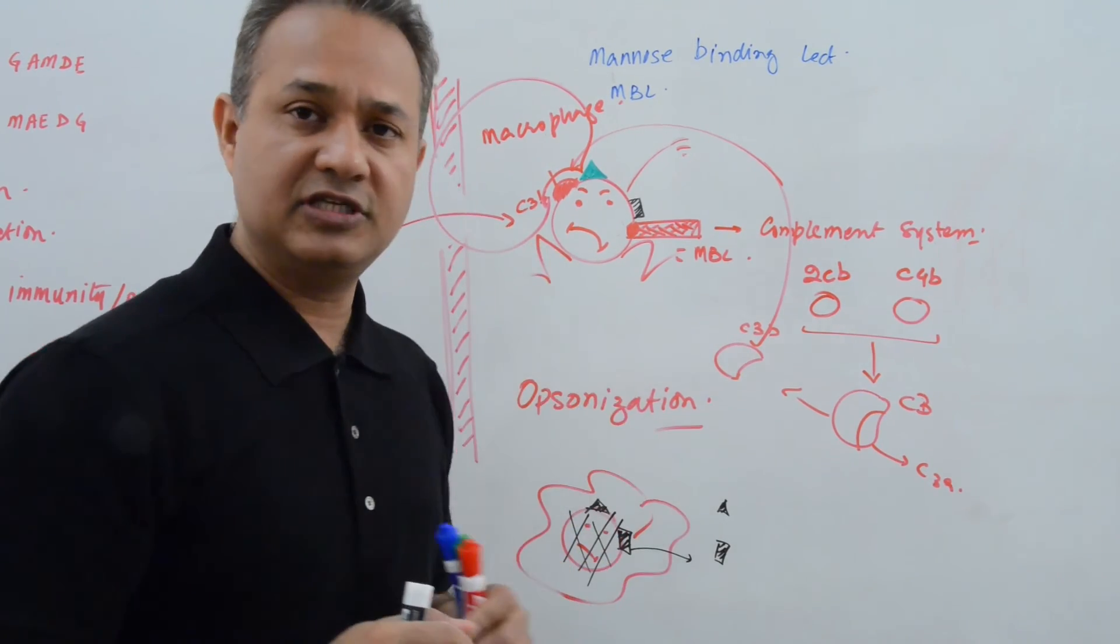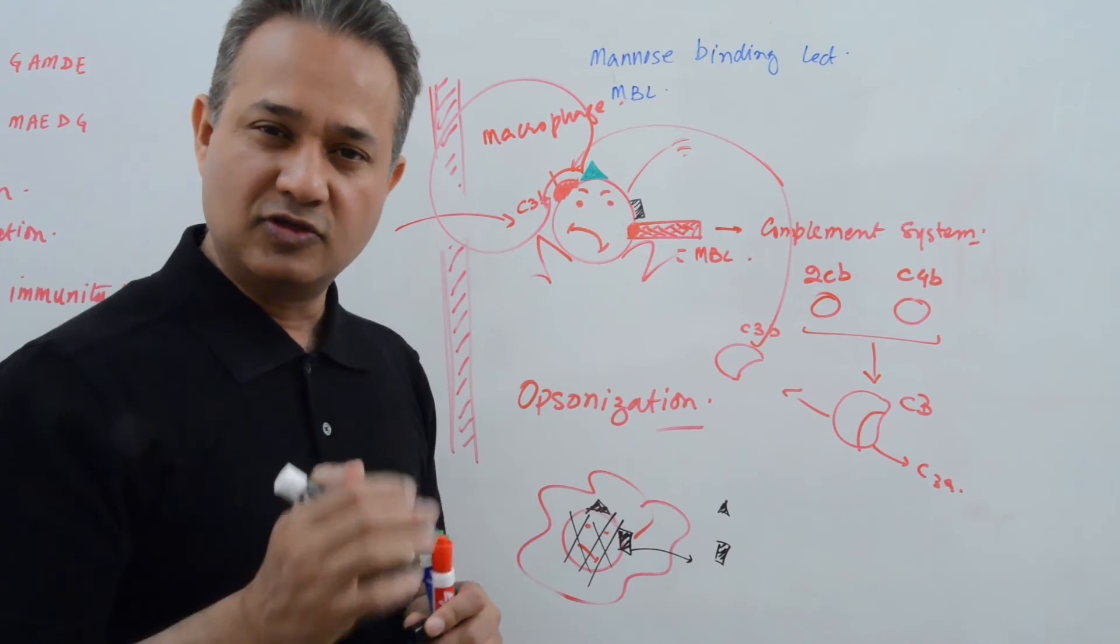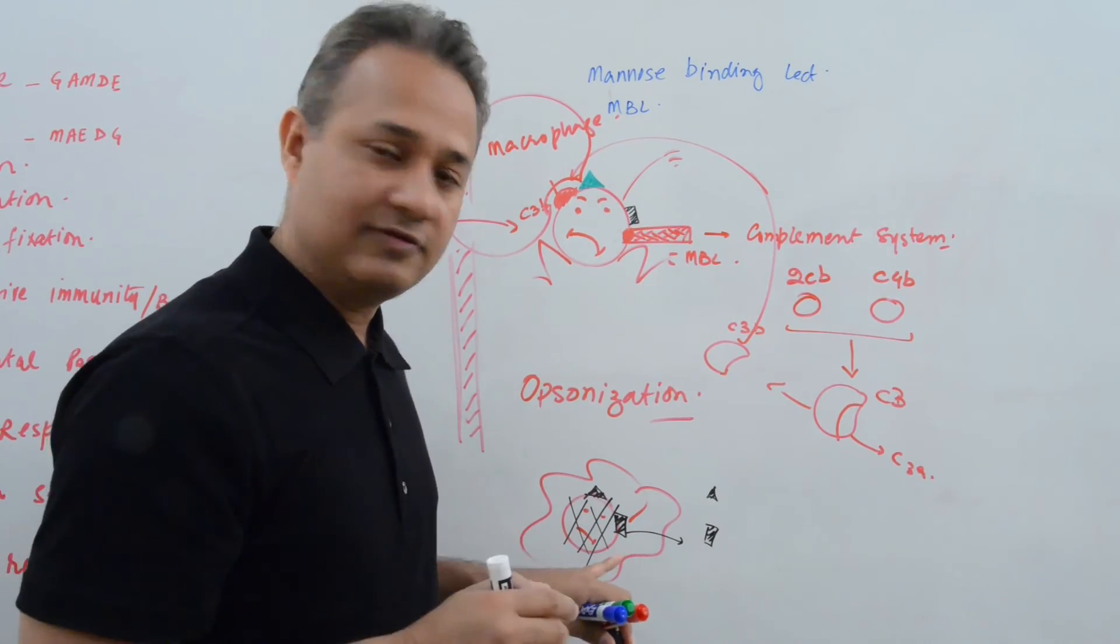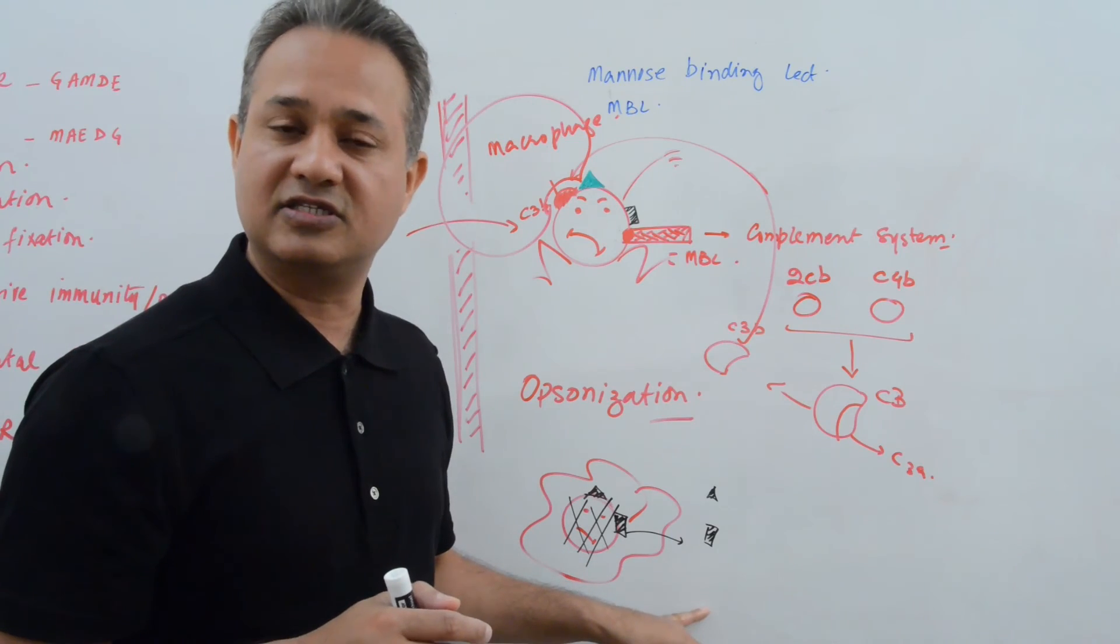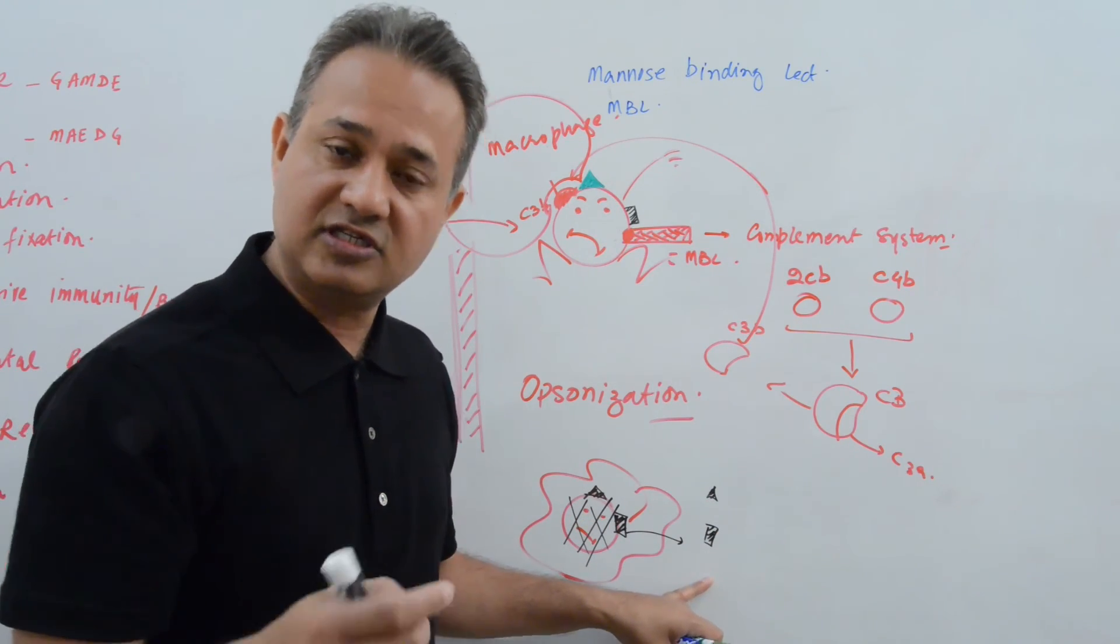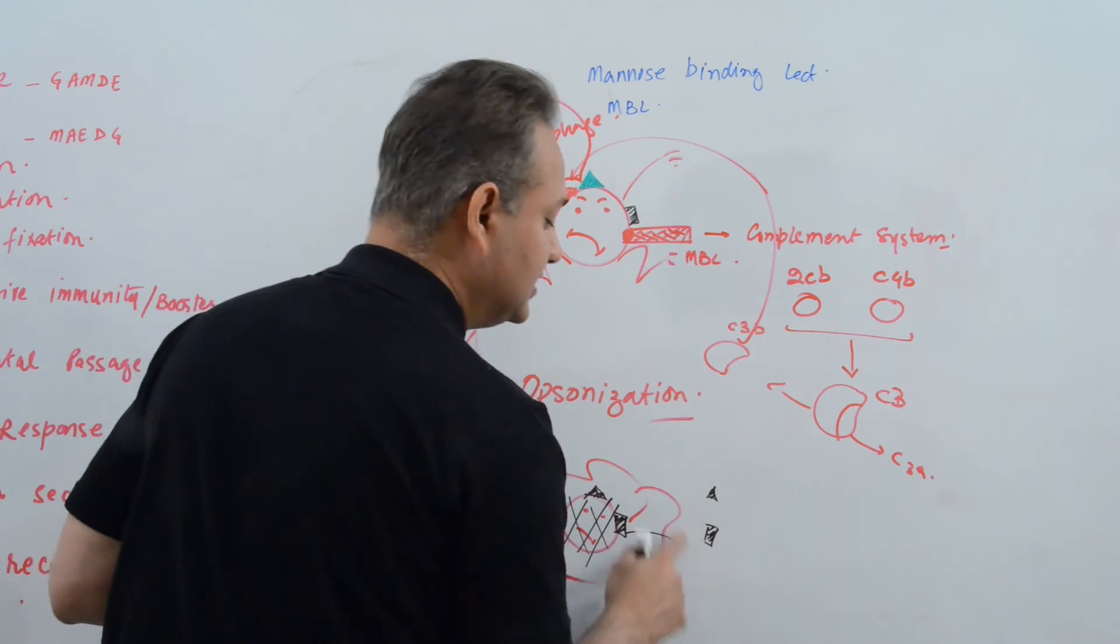On the other hand, macrophages actually put it on the MHC and present it outside. So these are antigen presenting cells. However, neutrophils are not. Because of that, they just release those in the interstitium. Now these antigens are present in the serum or in the interstitium or into the blood, wherever the infection is.